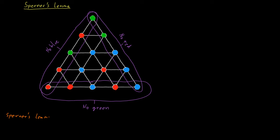Sperner's lemma says that each valid coloring of this type of graph results in at least one small triangle whose three corners are colored in three different colors. We call such small triangles trichromatic triangles.